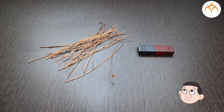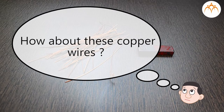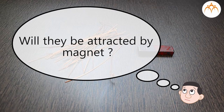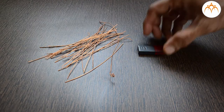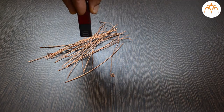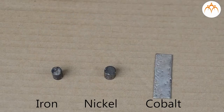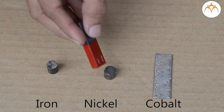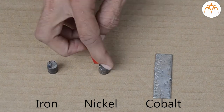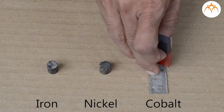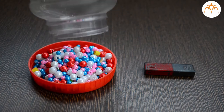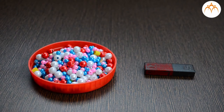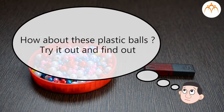How about these copper wires? Will they be attracted by a magnet? No. Only magnetic materials like iron, nickel and cobalt get attracted by a magnet. How about these plastic balls? Try it out and find out.